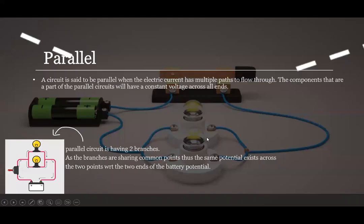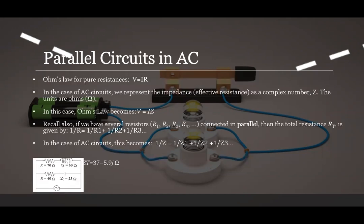Parallel circuits in AC. A circuit is said to be parallel when an electric current has multiple paths to flow. The components that are part of the parallel circuits will have a constant voltage across all of them. Okay, for the parallel circuits in AC, there is an example on this page. With the final answer next to it, you can use the formula to work out your answer.